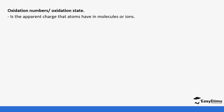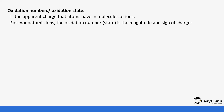Oxidation number is the apparent charge that atoms have in molecules or ions. For monoatomic ions, the oxidation number is the magnitude and sign of the charge. For example, magnesium with a charge of 2+ has an oxidation number of +2.